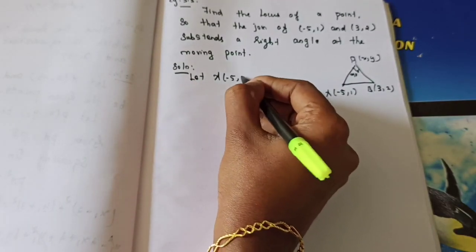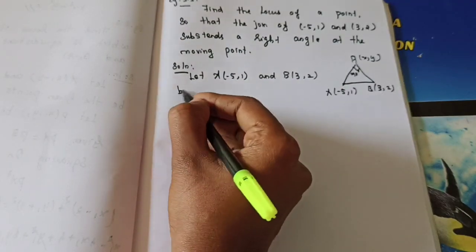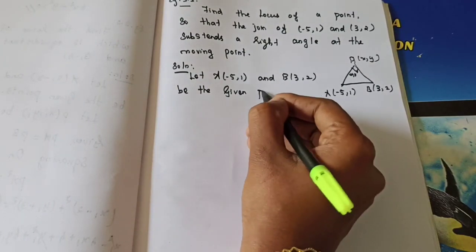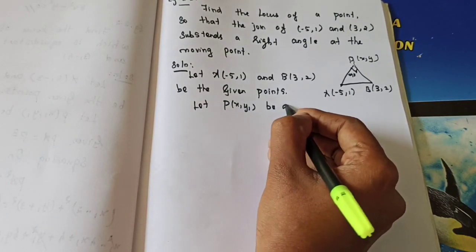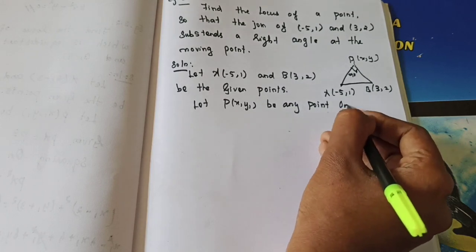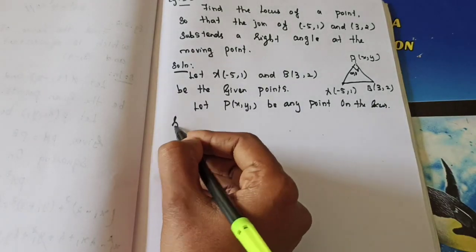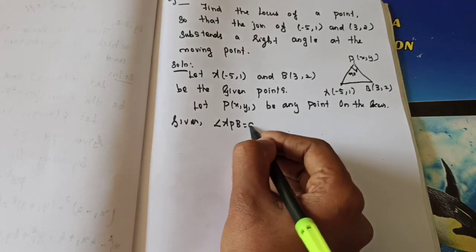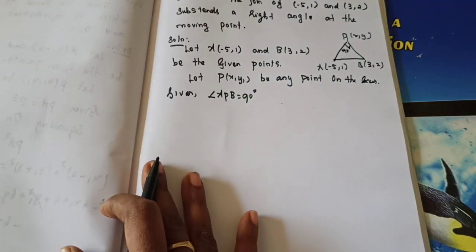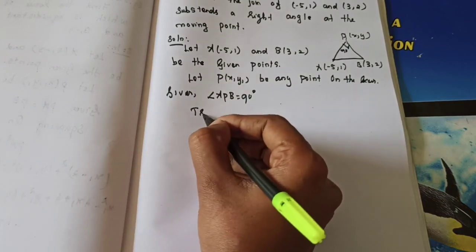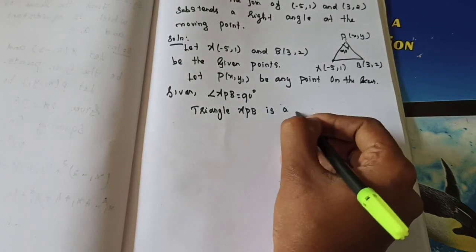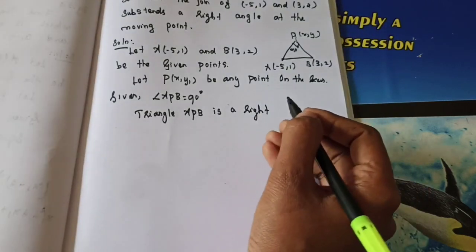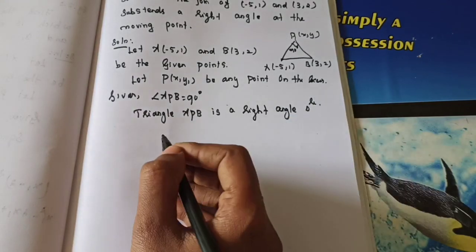Let A(−5, 1) and B(3, 2) be the given points and let P(x₁, y₁) be any point on the locus. Given: angle APB = 90°, so triangle APB is a right-angled triangle with right angle at P. Since it is a right-angled triangle, we will use the Pythagoras theorem: in a right-angled triangle, the square of the hypotenuse equals the sum of squares of the other two sides.